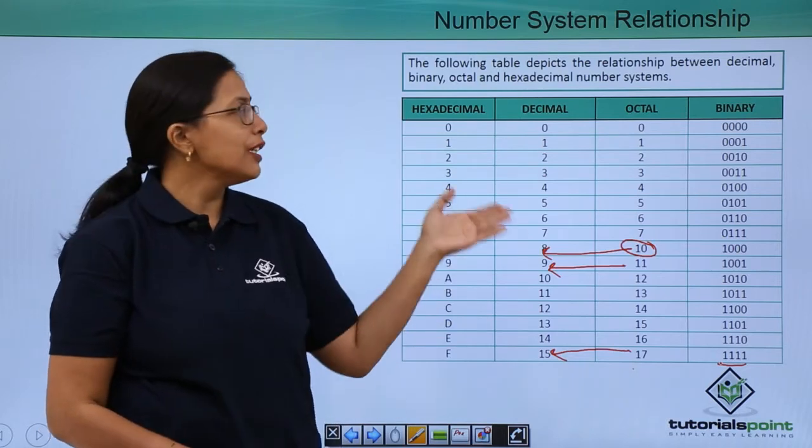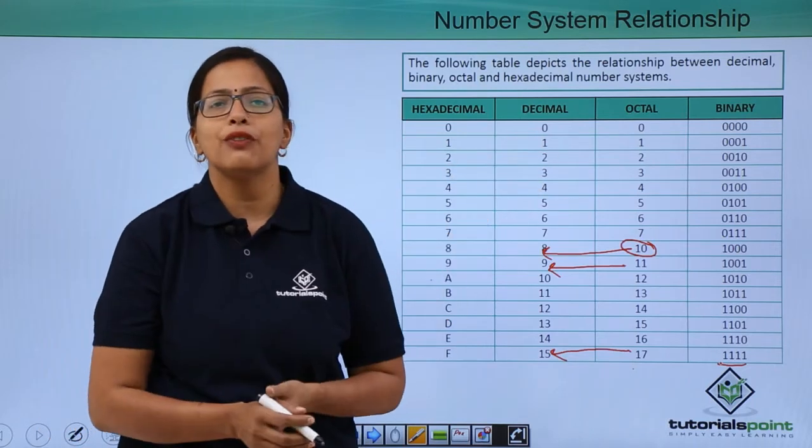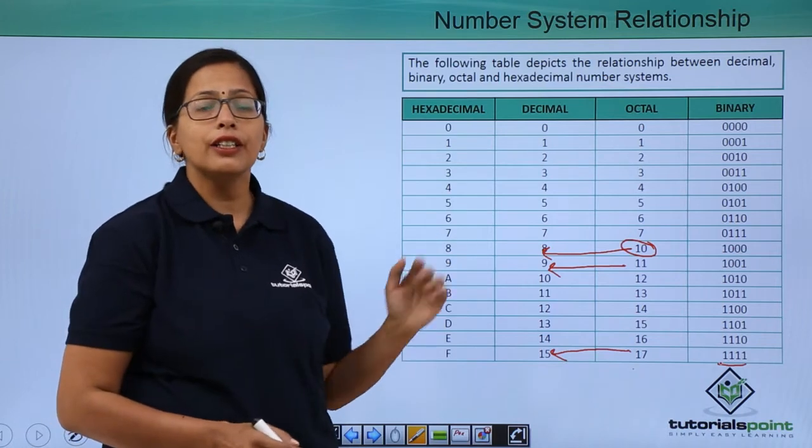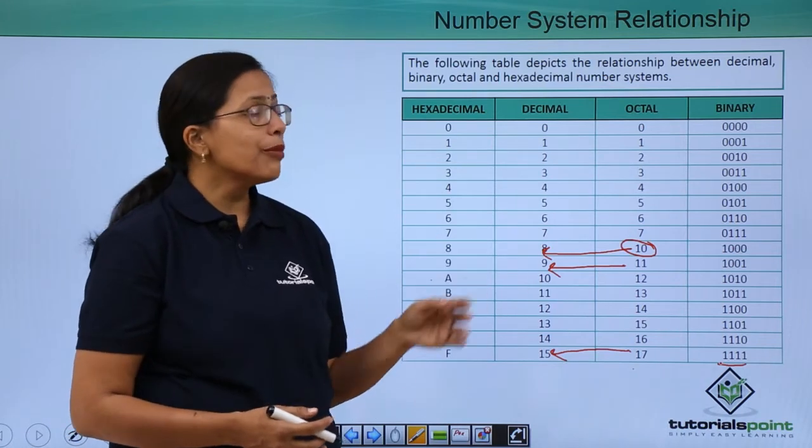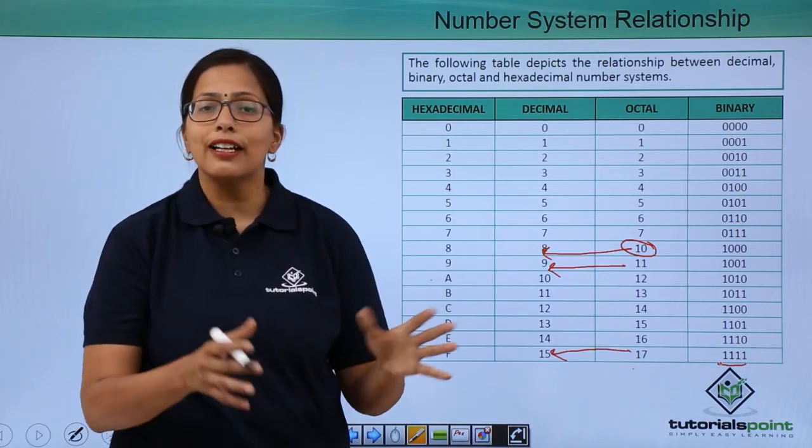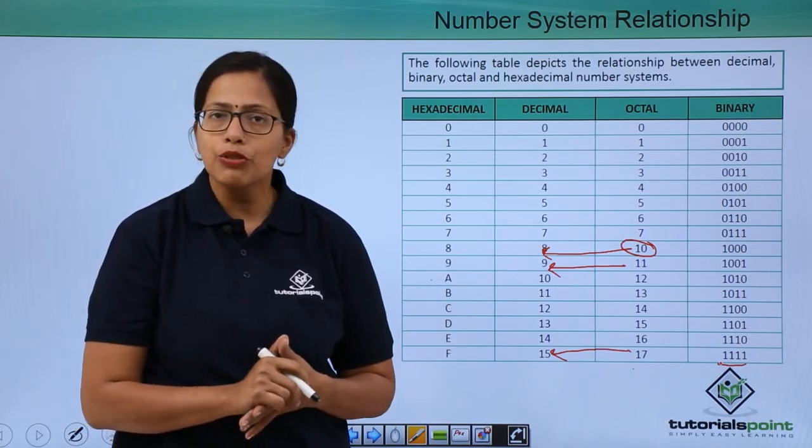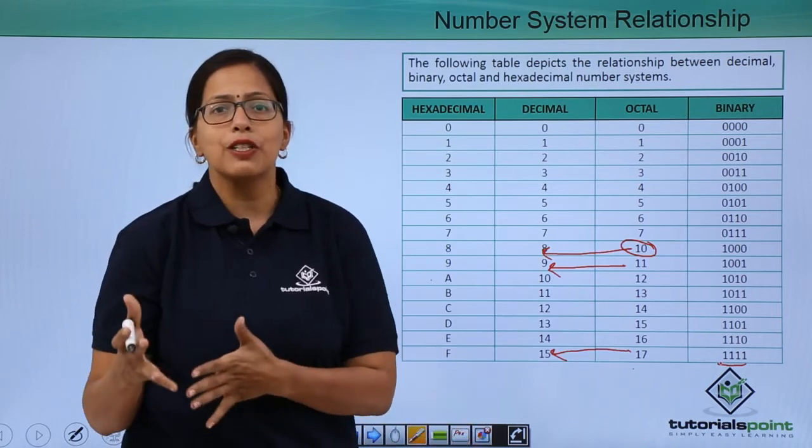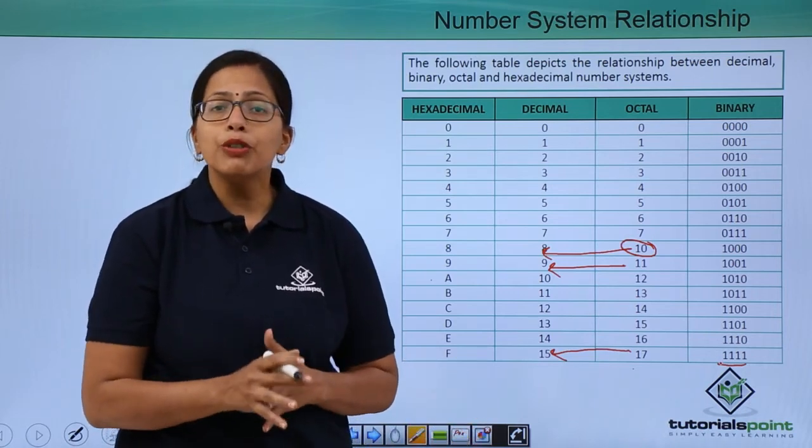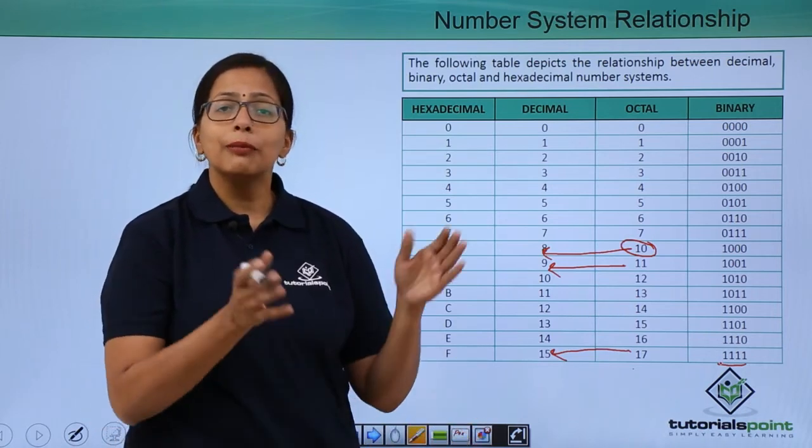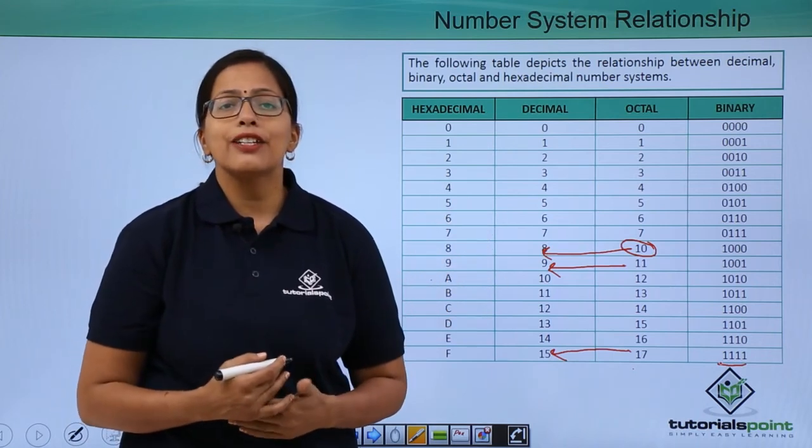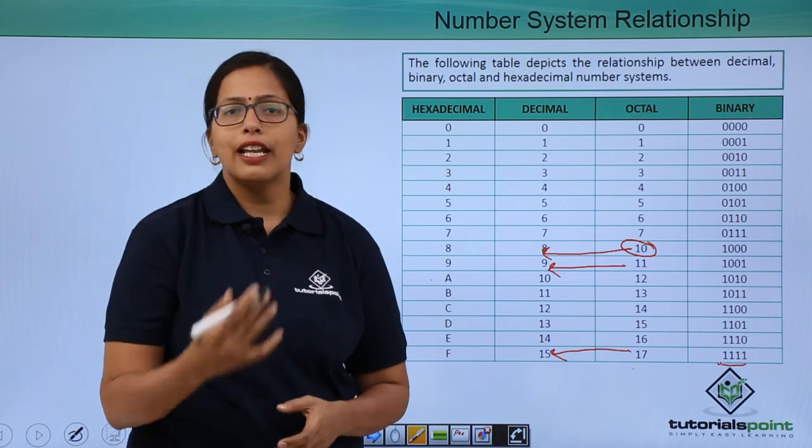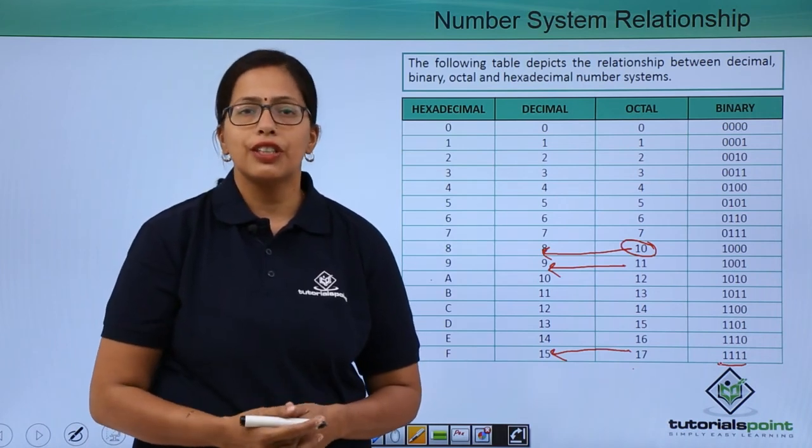So in this video, you have seen how all the number systems that we have learned are related to each other. However, you must know that numbers are not the only things that need to be handled by a computer. They also need to handle the alphabets, some special symbols. So computers actually have a complete code to facilitate the exchange of information. In our next video, we are going to cover that code.